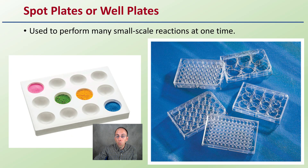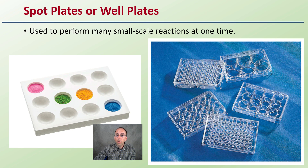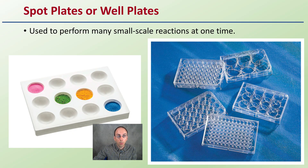Spot plates or well plates are something we'll use quite a bit. They're used to perform small-scale reactions, many at a time. Some are solid white, some are clear, some have larger wells and some smaller. Sometimes we'll use a test tube, and sometimes a well plate if the reaction involves really small volumes.